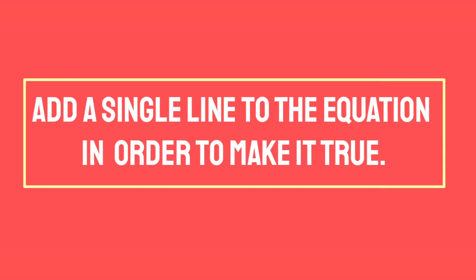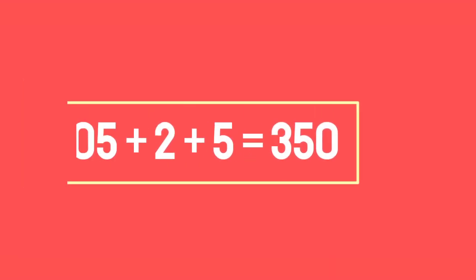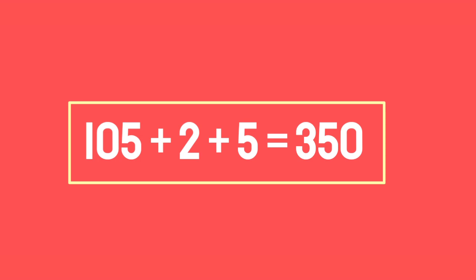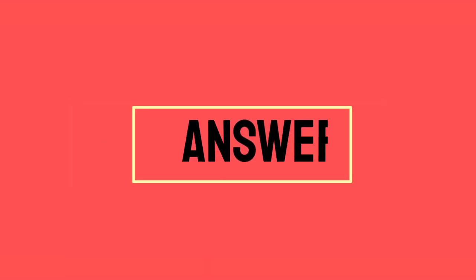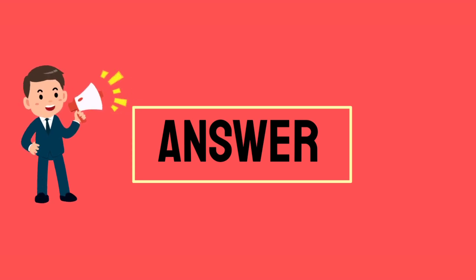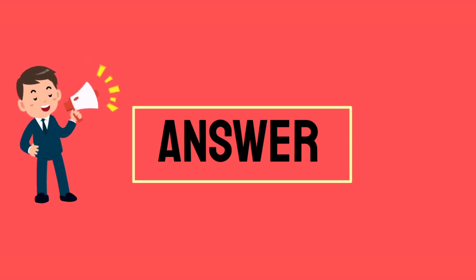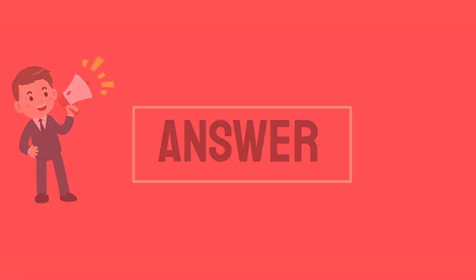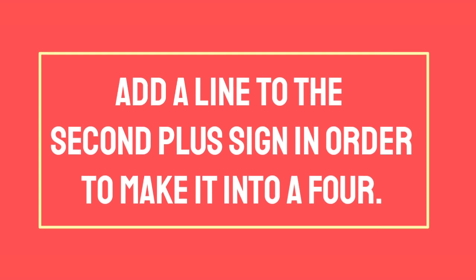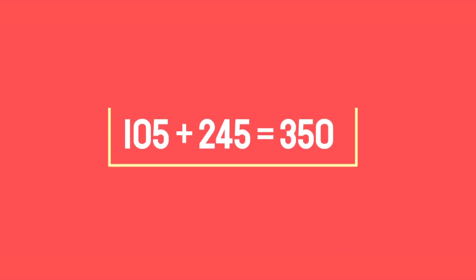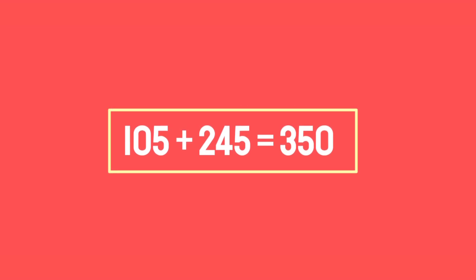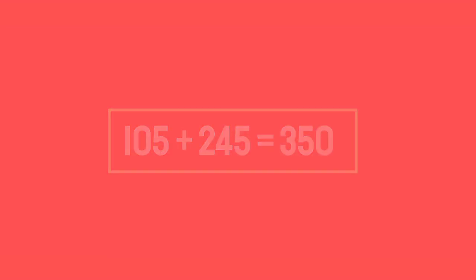Add a single line to the equation in order to make it true: 105 plus 2 plus 5 equals 350. Add a line to the second plus sign in order to make it into a 4, giving 105 plus 245 equals 350.